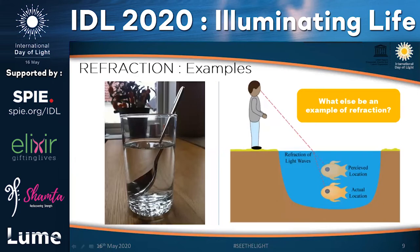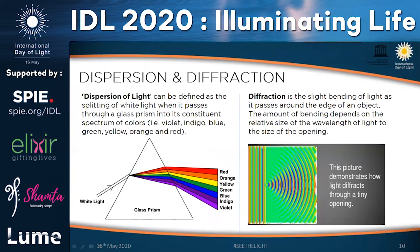Now covering dispersion and diffraction. Dispersion is the splitting of white light when it passes through a glass prism. You must have observed this phenomenon when sunlight enters a water droplet — that is why you see a rainbow, due to the dispersion of light.